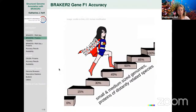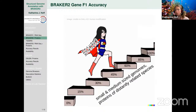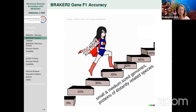BRAKER2 gene prediction accuracy using OrthoDB with no close relatives excluded: in small and medium-sized genomes, we end up in roughly the same accuracy range as BRAKER1, around 30–45%, sometimes a little better. If you include proteins of closely related species, accuracy can reach around 60%. So it is worth adding close-relative proteins in addition to distant ones.